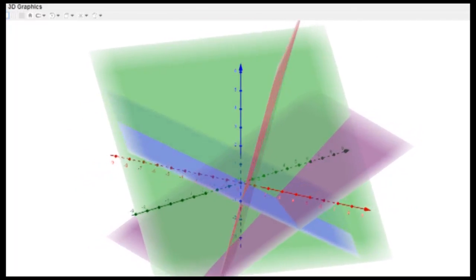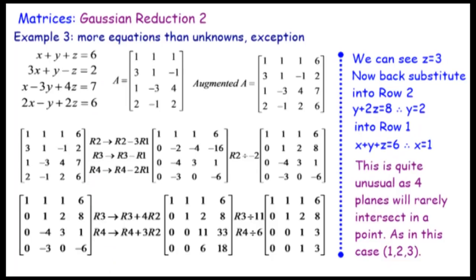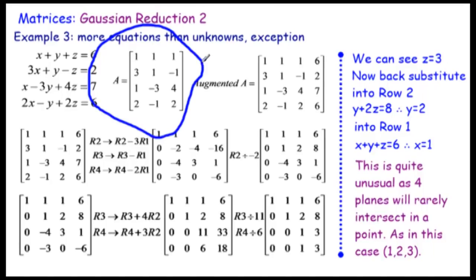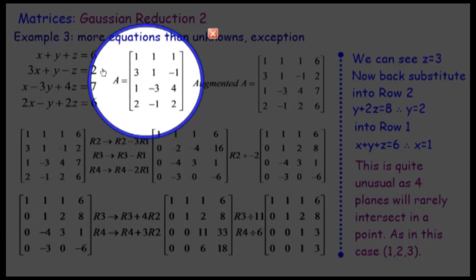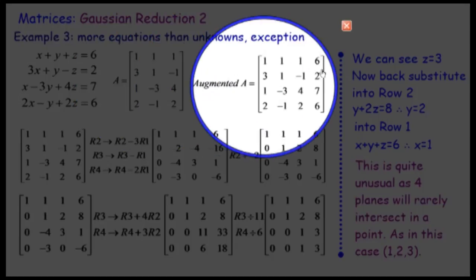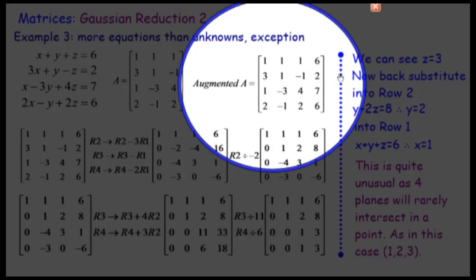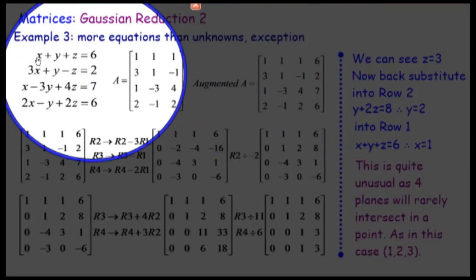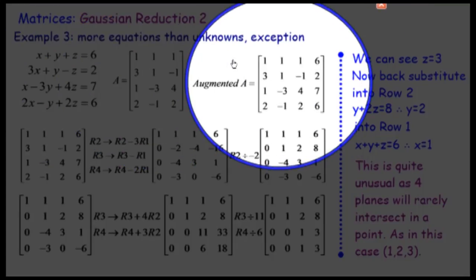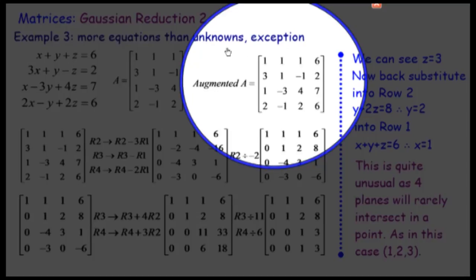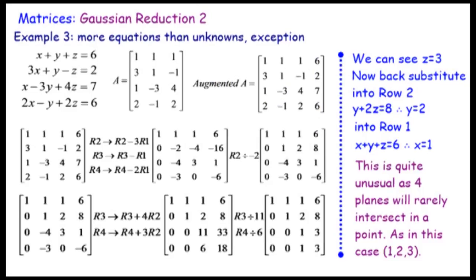Now Example 3: this is a situation where we have more equations than unknowns — four equations and three unknowns. We go through the same process again. We find the coefficient matrix A and the augmented matrix, adding in the constants 6, 2, 7, 6 from the coefficient matrix, and we start doing row operations on them.